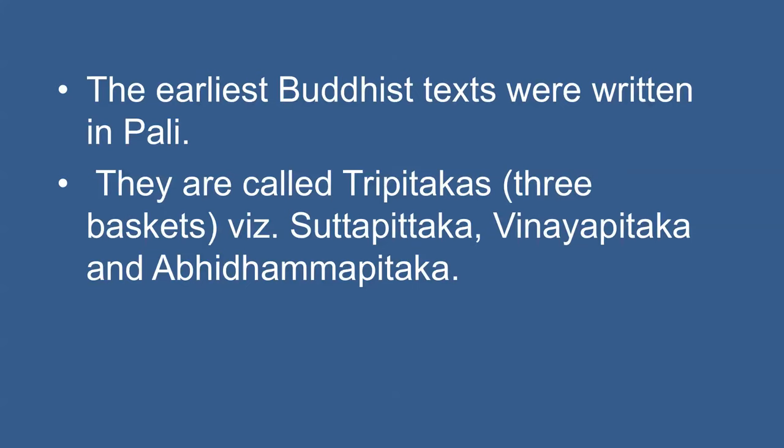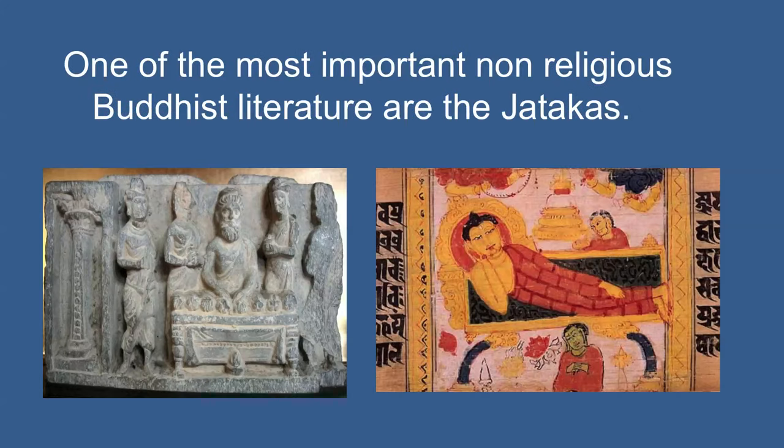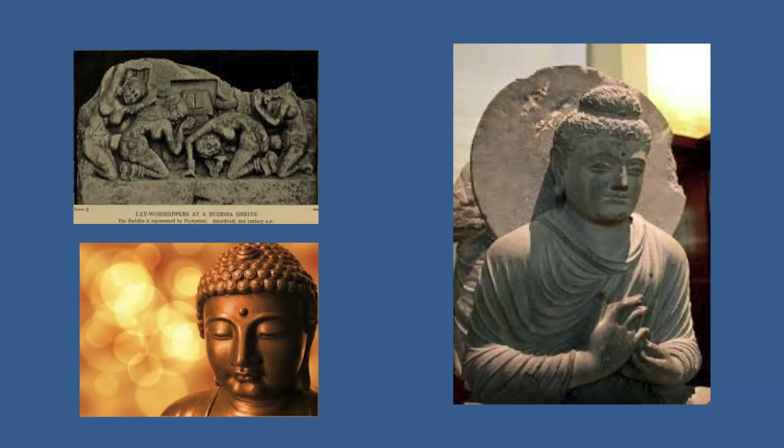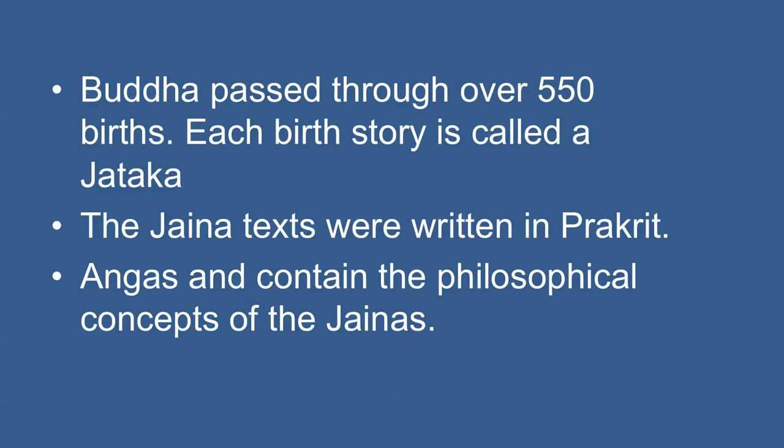The religious books of the Jains and Buddhists refer to historical persons and incidents connected with their respective religions. The earliest Buddhist texts were written in Pali and are called Tripitaka, i.e., Sutta Pitaka, Vinaya Pitaka, and Abhidhamma Pitaka. The most important non-religious Buddhist literature are the Jatakas, which contain stories of the previous births of the Buddha. It was believed that before he was born as Gautam, the Buddha passed through over 550 births. These stories throw invaluable light on the social and economic conditions of the people between the 5th and 2nd century BC. The Jain texts were written in Prakrit and were eventually compiled in the 6th century AD at Vallabhi in Gujarat. They are called Angas and contain the philosophical concepts of Jains.